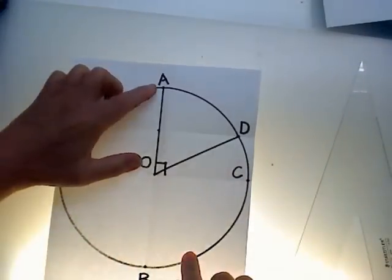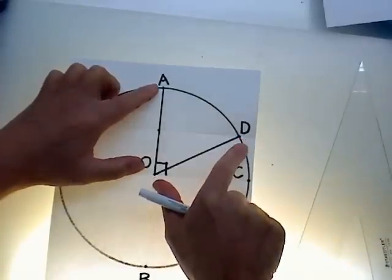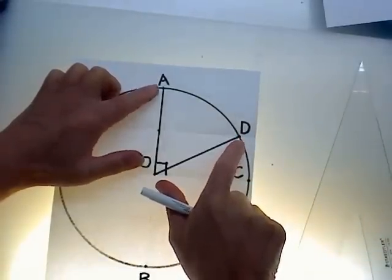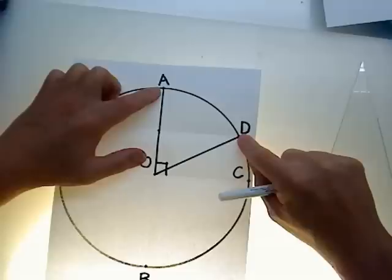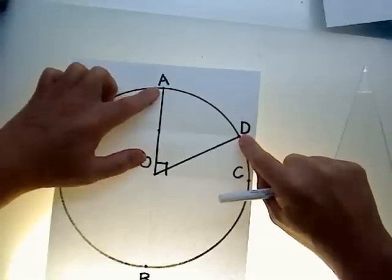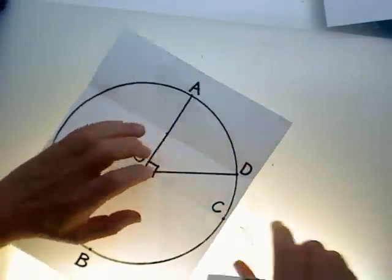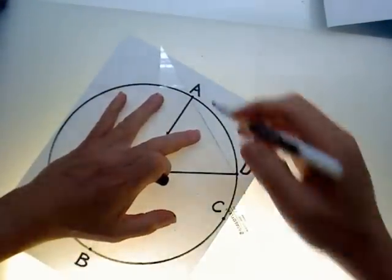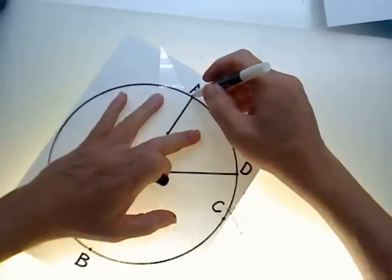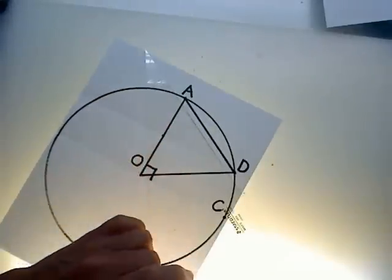OA is a radius, OD is also a radius, so we can argue that those two segments are equal to each other. Now we're going to create AD by drawing a segment between A and D to form a line.